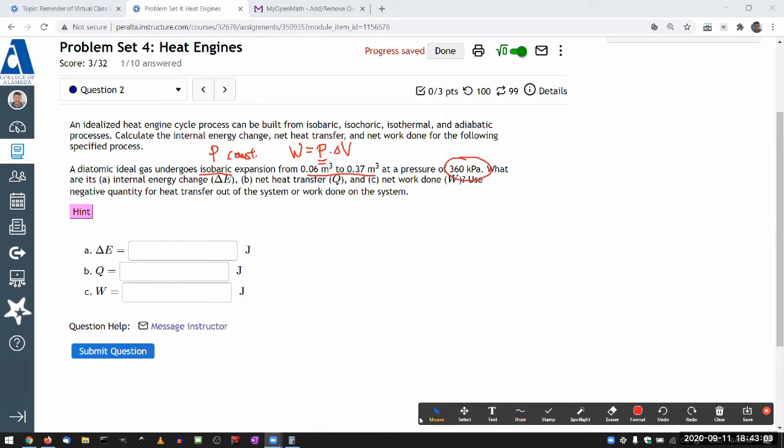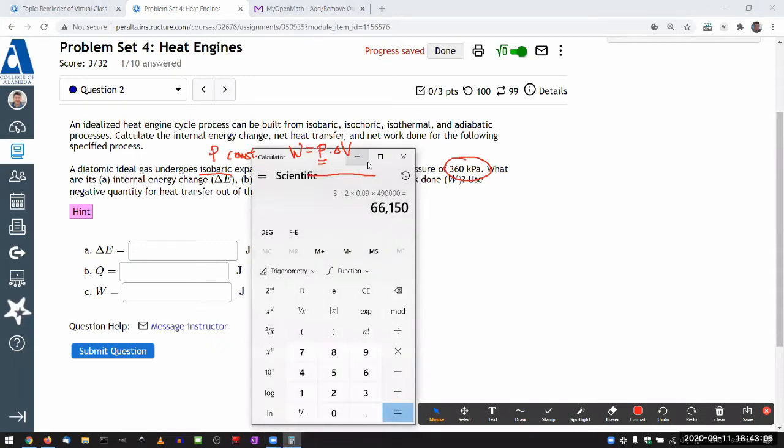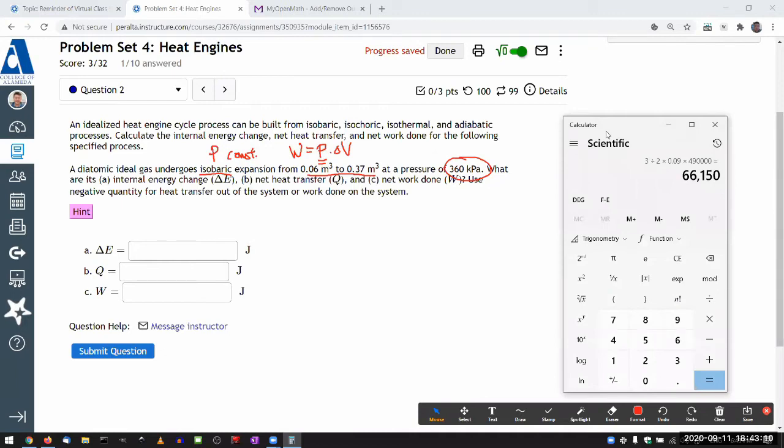Let me actually do that so that I get W as a numerical quantity early on. So that's going to be my pressure 360 times 10 to the power of three because it's kilopascal times the difference is 0.31, 0.31 cubic meter.